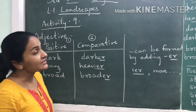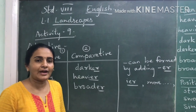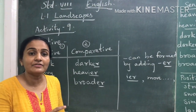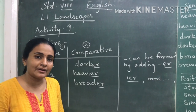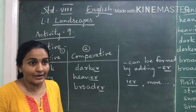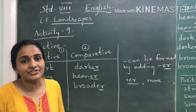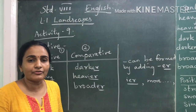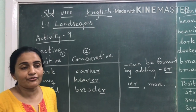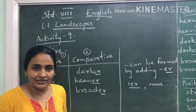In Activity 8 we have done an activity regarding adjectives. Adjectives, as you already know, are describing words — they describe a noun. They tell us something more about a noun. You have already tried writing a few adjectives for words like movie, beauty, and food.